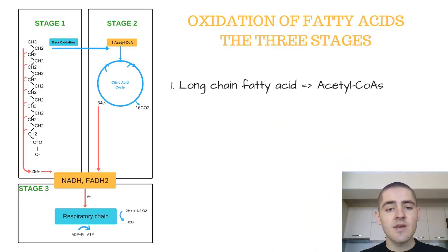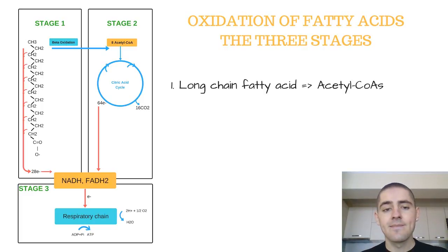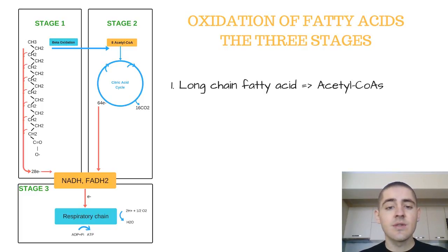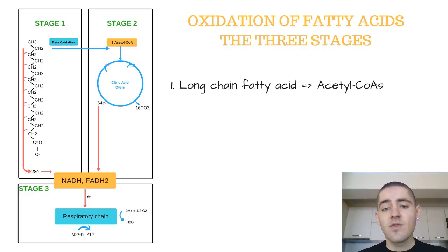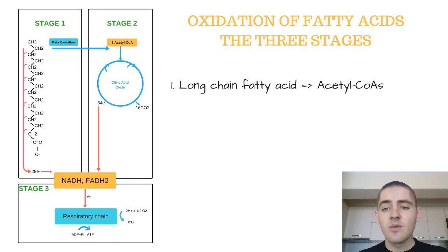In the first stage, we have our long-chain fatty acid, the 16-carbon palmitate, which is being removed two carbons at a time in the form of acetyl-CoA. It is important to note that in step 1, the formation of each acetyl-CoA molecule will require dehydrogenase enzymes to remove four hydrogen atoms from the fatty acyl moiety. After all cycles of beta-oxidation are completed, there will be eight acetyl-CoAs to progress into stage 2.